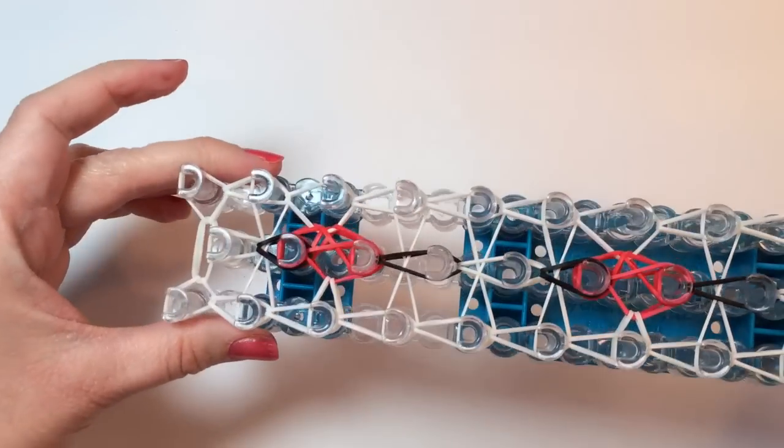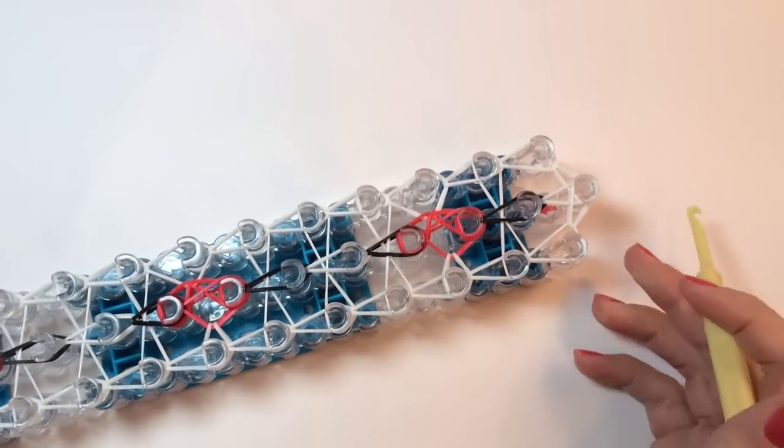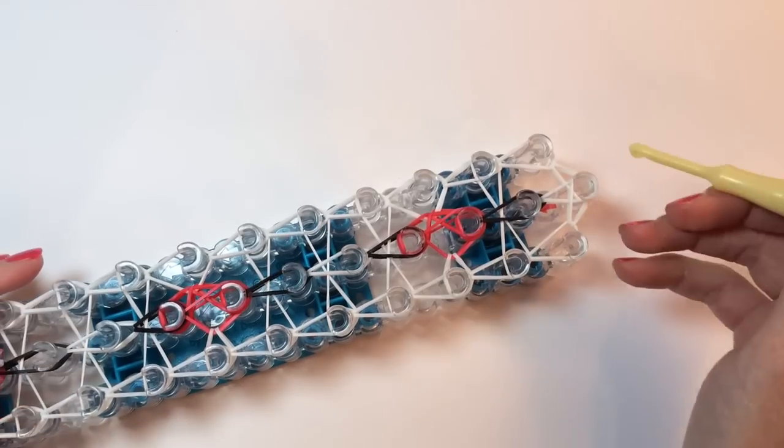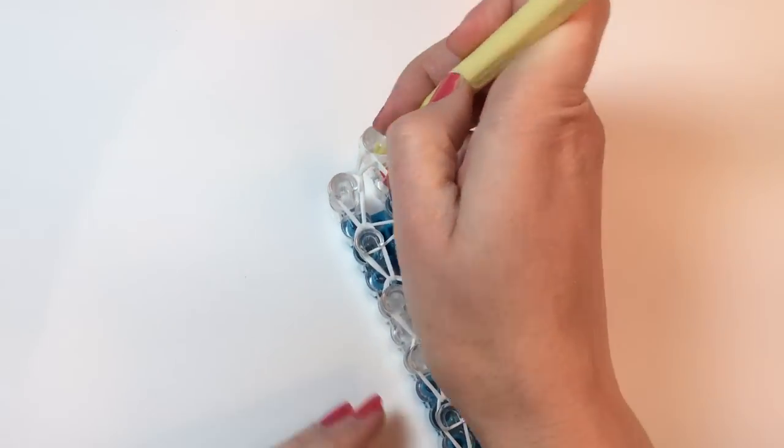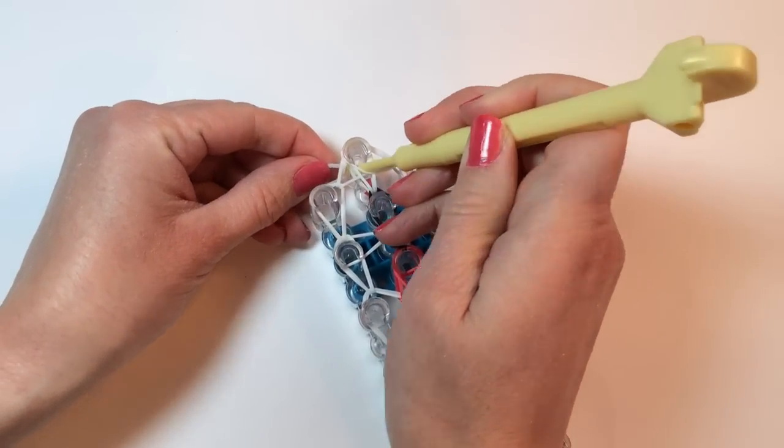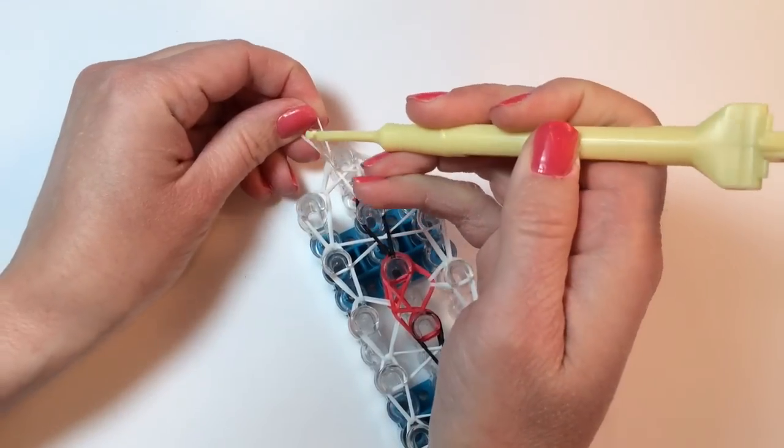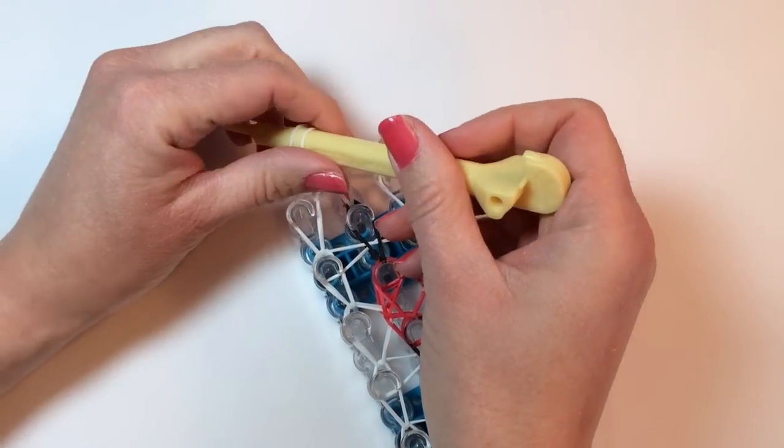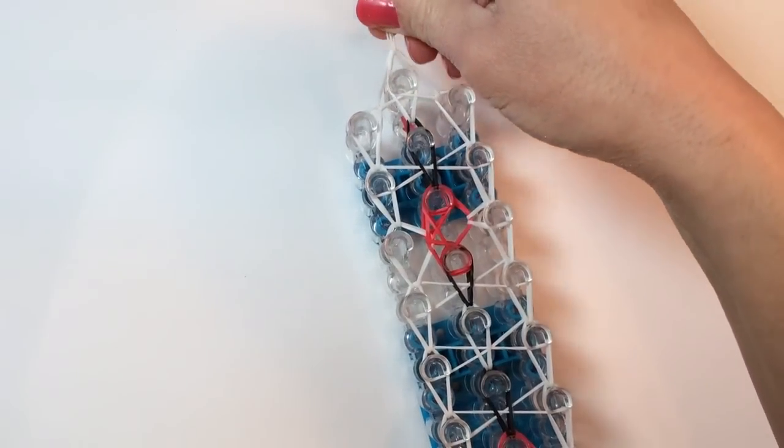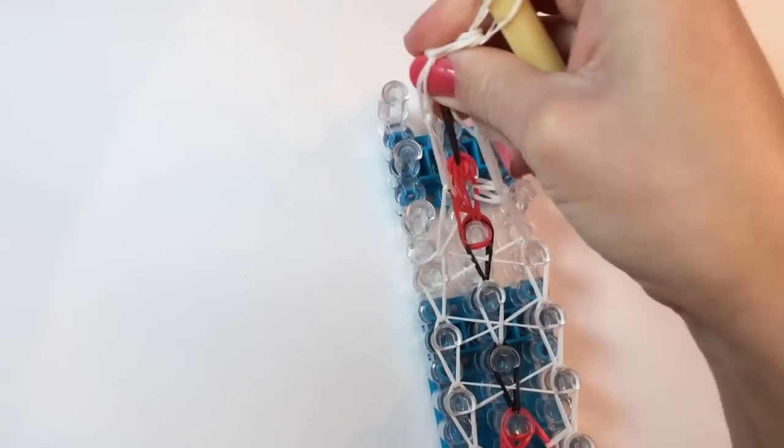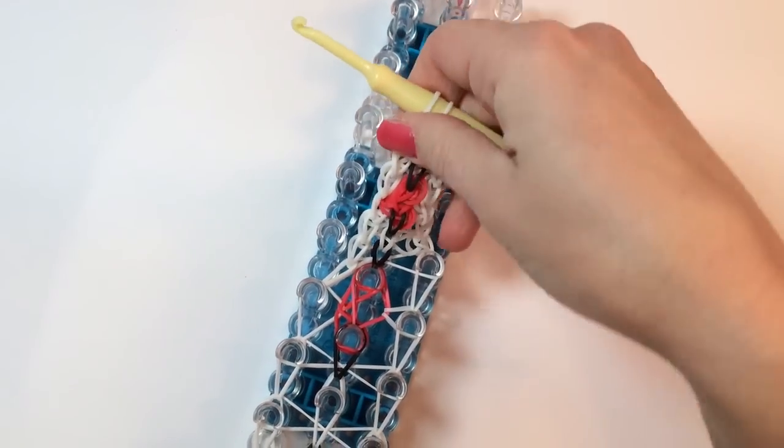Now the only part that's left is creating the extension that you want for your bracelet. So we're going to take our hooks and place it into here. Catch your rubber band. Bring it to the center. Place that on the thick part of your hook so you don't lose it. And we can pop off our Valentine hearts. See how that comes out? So cute.